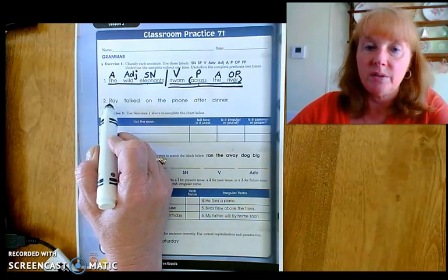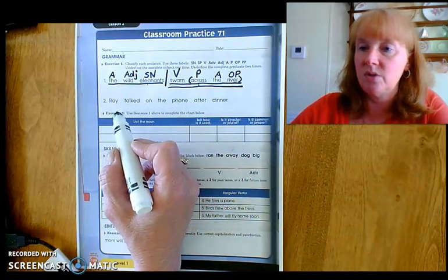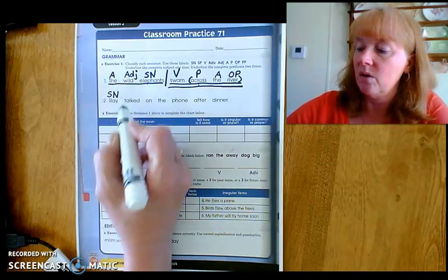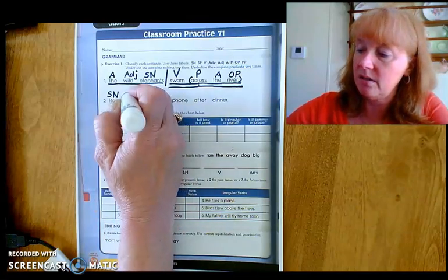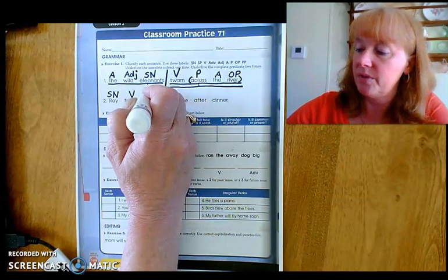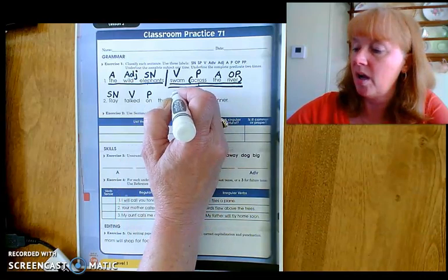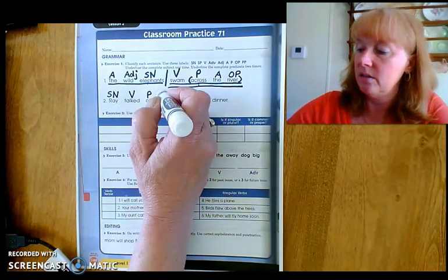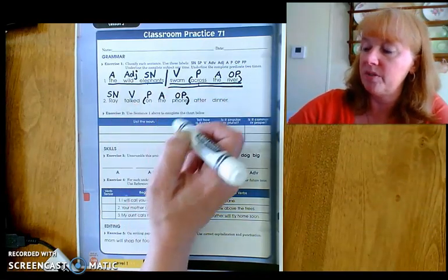Read number two with me. Ray talked on the phone after dinner. Who talked? Ray. Subject noun. What is being said about Ray? Ray talked. Verb. On. Preposition. On what? Phone. Object of the preposition. The. Article adjective. On the phone. Prepositional phrase.